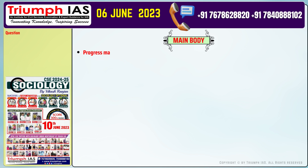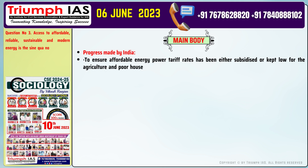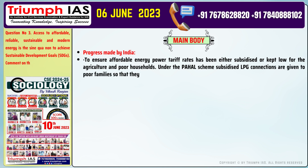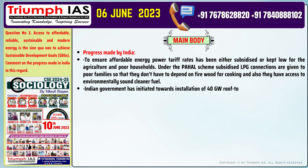Progress made by India, Point 1: To ensure affordable energy, power tariff rates have been either subsidized or kept low for agriculture and poor households. Under the PAHAL scheme, subsidized LPG connections are given to poor families so they don't have to depend on firewood for cooking and have access to cleaner fuel. Point 2 (implied): The Indian government has initiated installation of 40 gigawatts of rooftop solar panels and subsequent abatement of 6 crore tonnes of CO2 per year.